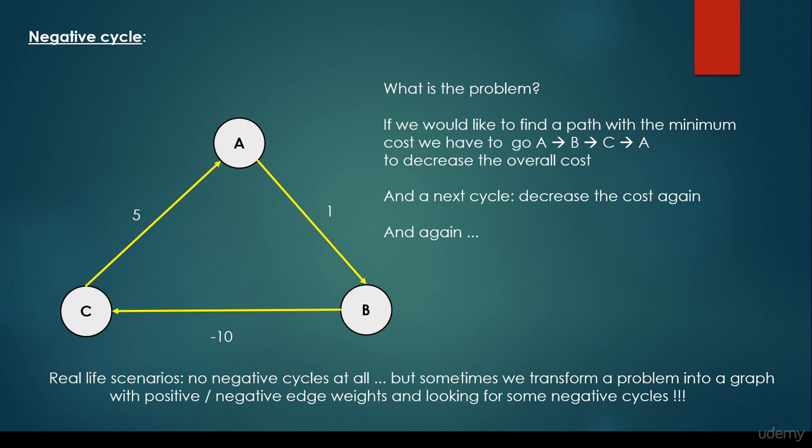So just to be clear, what is a negative cycle? What's the problem itself? If we would like to find a path with the minimum cost, we have to go from A to B, B to C, and back from C to A in order to decrease the overall cost.